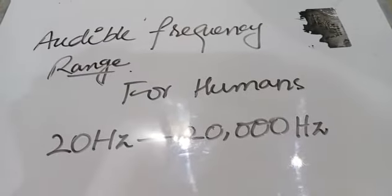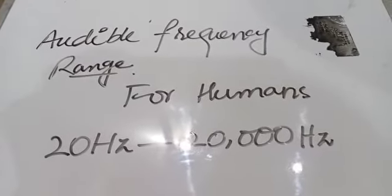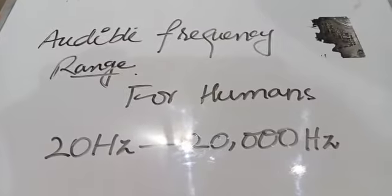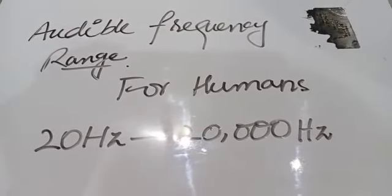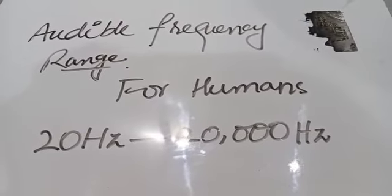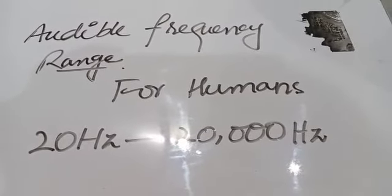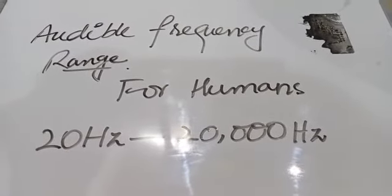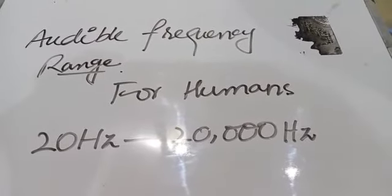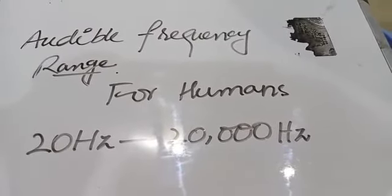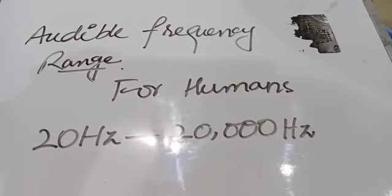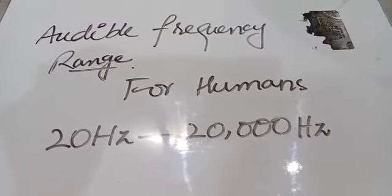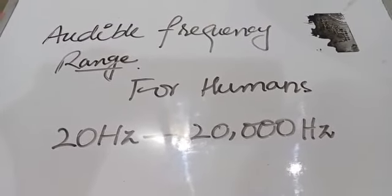The audible frequency range: sound is produced by a vibrating body. A normal human ear can hear sound only if the frequency lies between 20 Hz and 20,000 Hz. A human ear can neither hear a sound of frequency less than 20 Hz nor more than 20,000 Hz. Different people have different ranges of audibility, and the range decreases with age. Young children can hear up to 20,000 Hz, but older people may not hear sounds above 15,000 Hz.